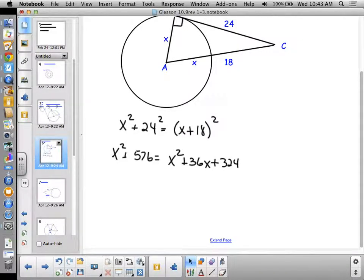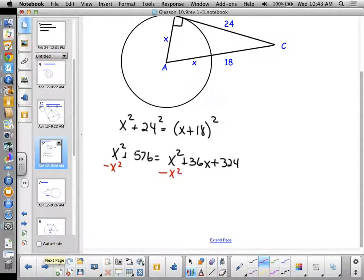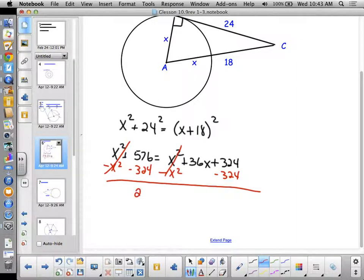Now, it looks like it's going to be tough, but it's not because the X squared terms cancel out. So, then I just subtract 324 from each side. So that gives me 252 equals 36X, divided by 36, and 252 divided by 36 is 7. So, the radius is 7, that's 7, and that's going to be 25 then, isn't it? Okay. So, there we are.